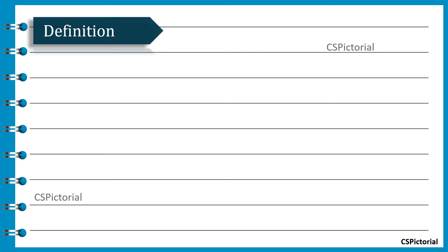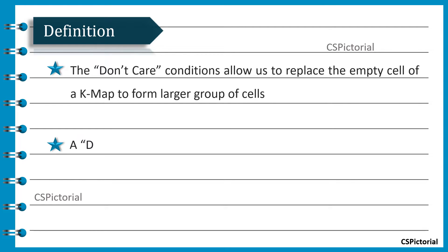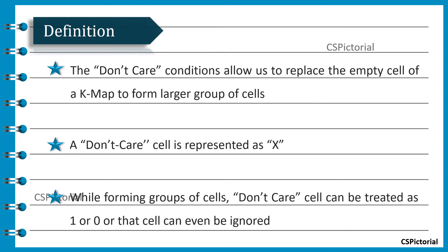First, let us try to understand what the don't care condition means. The don't care conditions allow us to replace the empty cells of a KMAP to form larger groups of cells. A don't care cell is represented as x. While forming groups of cells, a don't care cell can be treated as 1 or 0, or even that cell can be ignored. Let's get it clear with some simple examples.